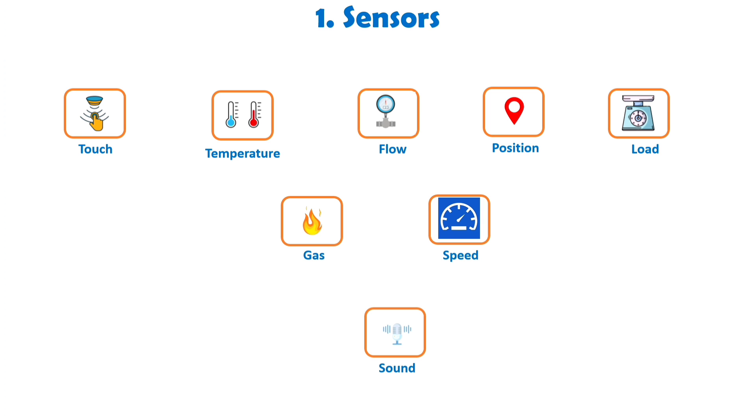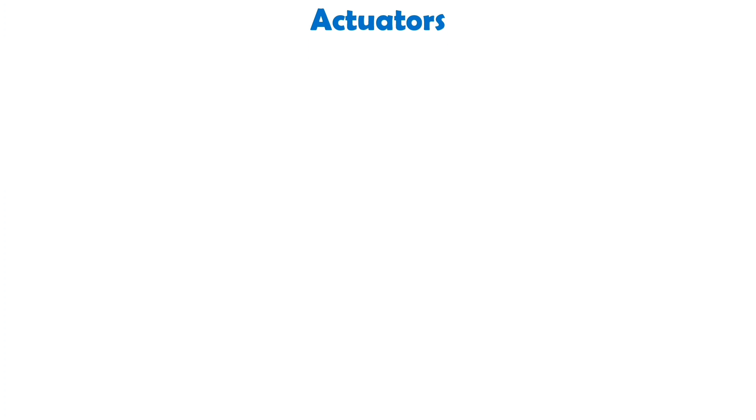Factors such as accuracy, reliability of results, operational range, resolution, and the level of intelligence also influence the choice of sensors. Let's now turn our attention to actuators, which function in the opposite manner to sensors. While sensors sense and gather information, actuators take action and serve as the final control element. When they receive a signal or command, they initiate a specific action. Similar to sensors, actuators can be either analog or digital.